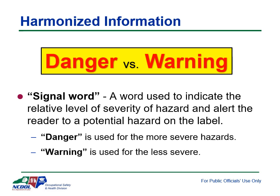Let's look at each label element in more detail. A signal word indicates the level of severity of hazard and alerts the reader to the potential hazard on the label. It typically appears near the top of a warning, sometimes in all capital letters, and serves a dual purpose: alerting the user to a hazard and indicating a particular level of hazard. The final rule requires one of two signal words: 'danger' or 'warning.' Danger is used for more severe hazards; warning is used for less severe hazards. If any hazard category has an associated signal word of danger, that is the only signal word that can be used.